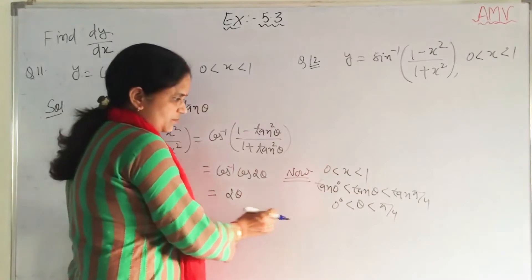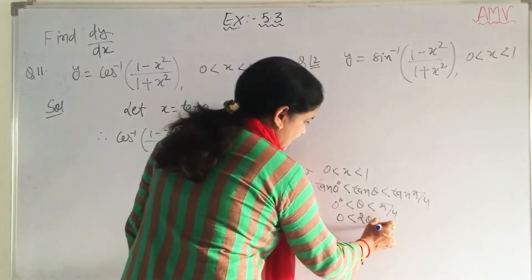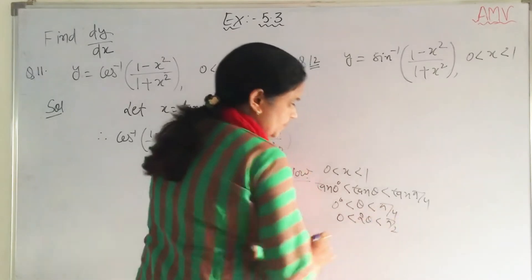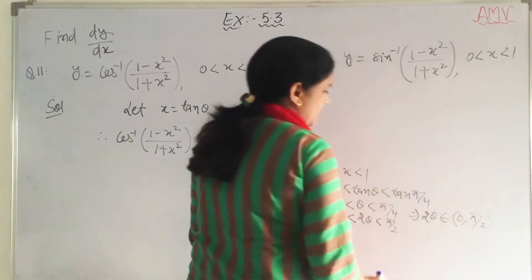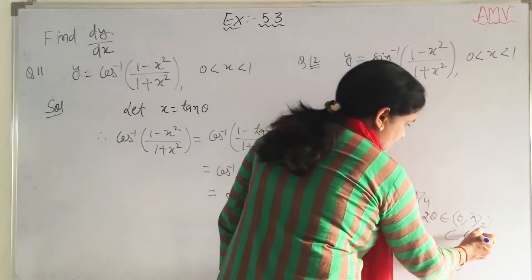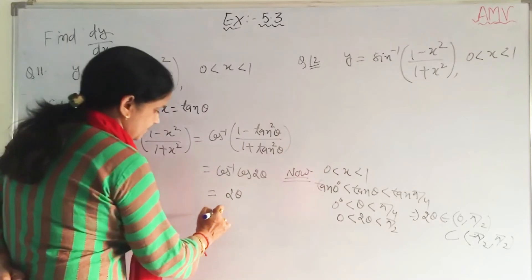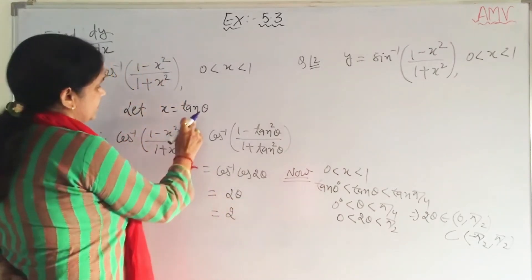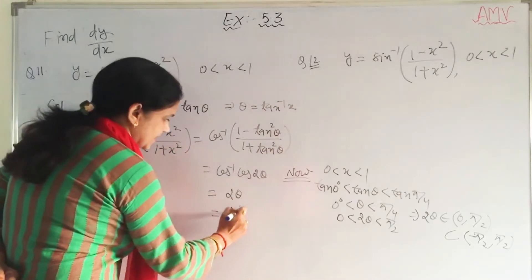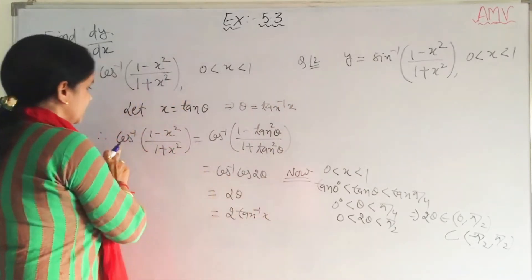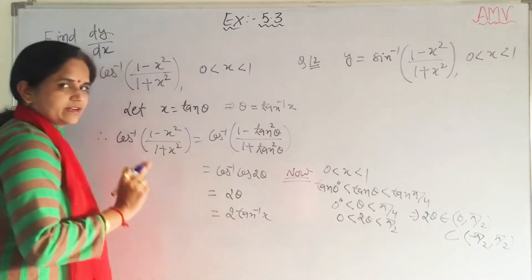We require 2 theta, so multiply this inequality by 2. We get 0 less than 2 theta less than pi by 2. So 2 theta belongs to 0 to pi by 2, which is a subset of minus pi by 2 to pi by 2. Write the range. Now, since x equals tan theta, we have theta equals tan inverse x, so write tan inverse x here.